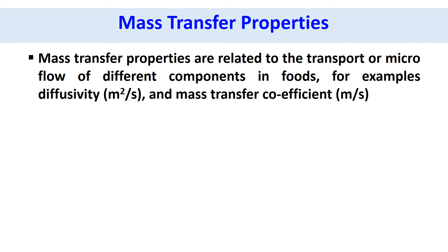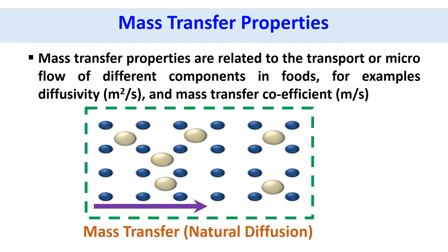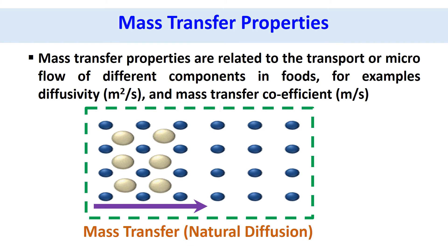Mass transfer properties are related to the transfer or micro-flow of different components in foods, for example diffusivity and mass transfer coefficient. In this slide we can see the natural diffusion process of a component in a matrix.